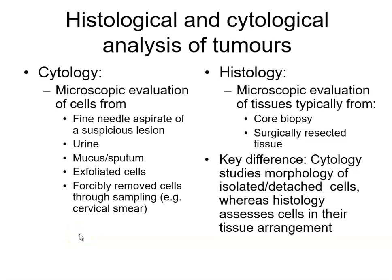When looking at tumour material we have two main methods: cytology and histology. Cytology is the microscopic evaluation of free cells. We could be looking at a fine needle aspirate of a lump — putting a needle into that lump and aspirating off some cells using saline — or looking at urine by taking a sample and sedimenting the cells out. Mucus and sputum samples can be taken, and we can look at exfoliated or forcibly removed cells, such as a cervical smear, where surface cells are taken from a potential lesion.